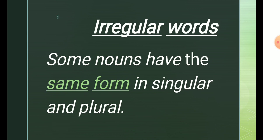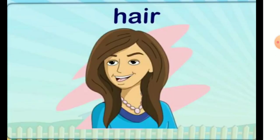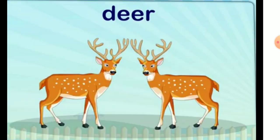Some nouns have the same form in both singular and plural. They are called irregular words. Some examples of irregular words are: sheep, deer.